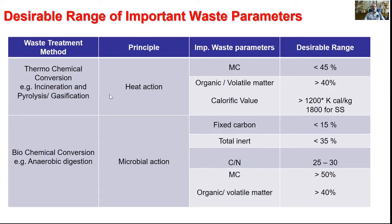Whenever we are going for this particular thermochemical conversion, principally we are making use of heat. As far as the kind of waste which needs to be processed through these techniques, we have to attend to certain parameters: it has to be dry in form, it must have volatile content greater than 40 percent, and it must have high energy values such as 1200 to 1800 kilocalories per kg. Especially for combustion, in order to make the oxidation self-sustainable, the waste must have a calorific value greater than 1800 kilocalories per kg.